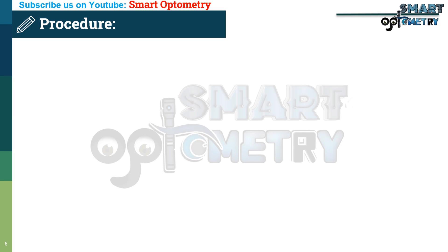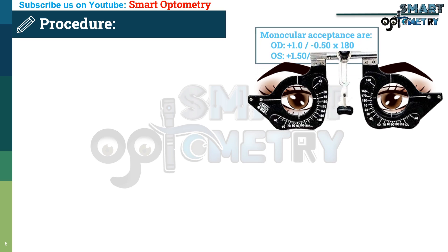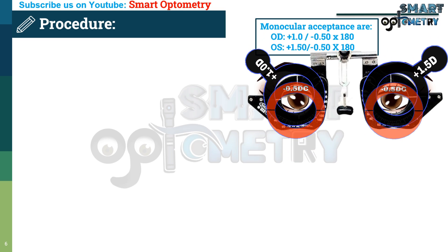Now for the procedure, let's take an example. The patient's monocular acceptance is: right eye — plus 1.00 / minus 0.50 at 180 degrees axis; left eye — plus 1.50 / minus 0.50 at 180 degrees axis. Before starting the procedure, we place the monocular acceptance lenses in the trial frame.